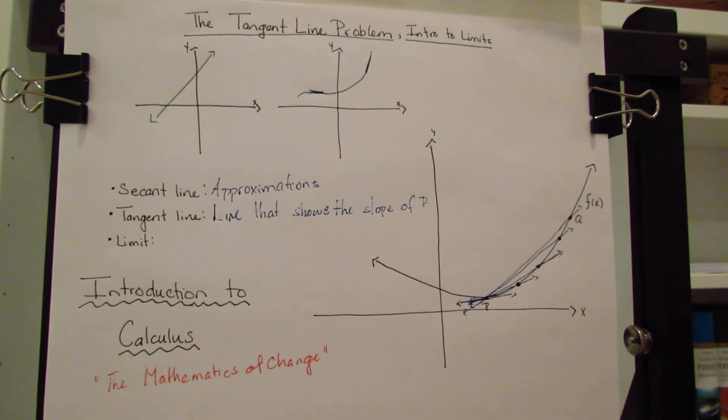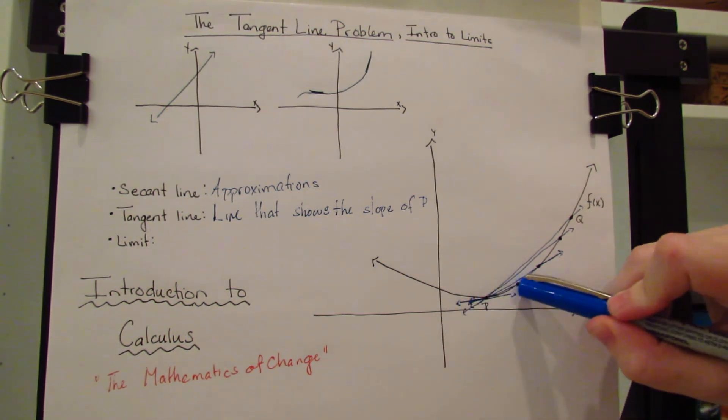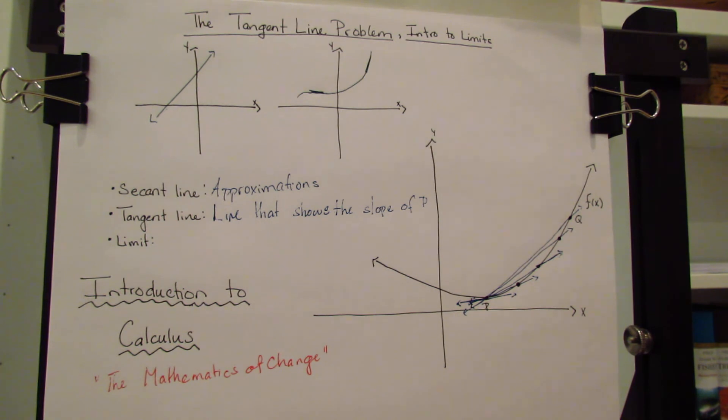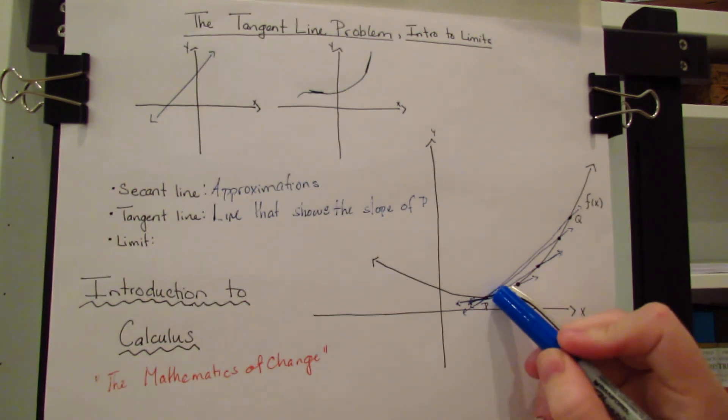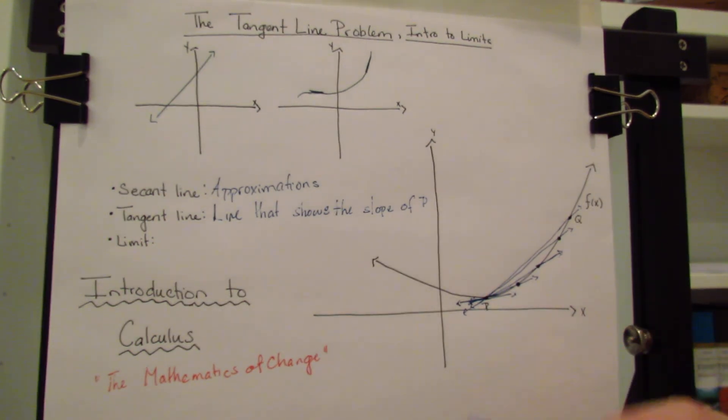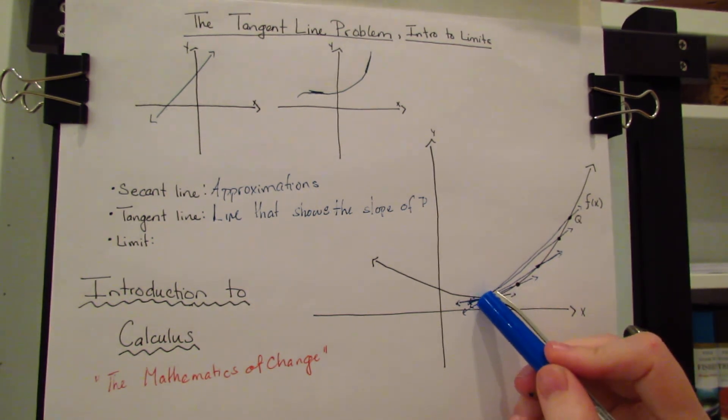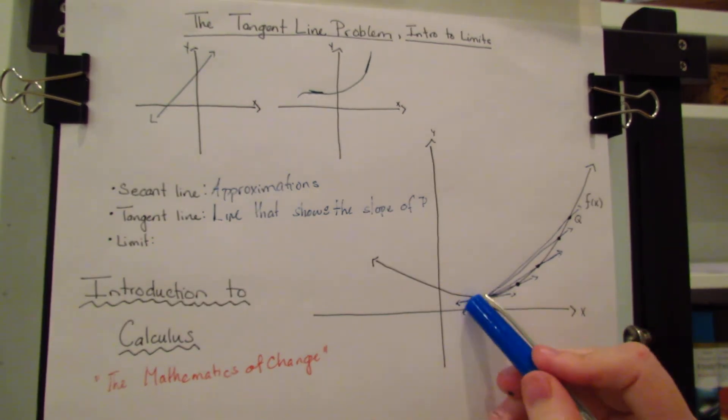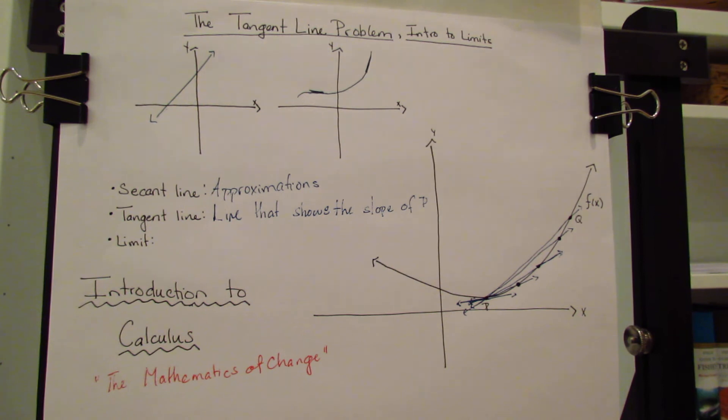Now, this line, you can tell it's the tangent line because it does not cross over the line twice right here. If it had crossed over and touched even one more point right here, it would not be the tangent line. It would be a secant line. However, since it is only touching P in this area, it shows you the tangent line of P.